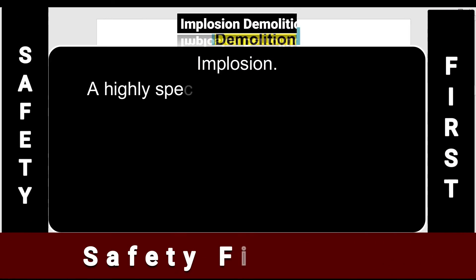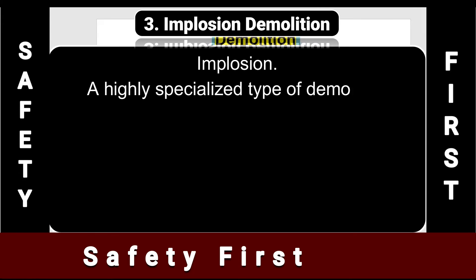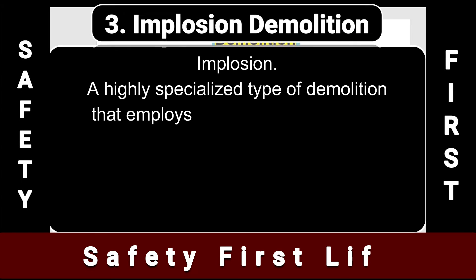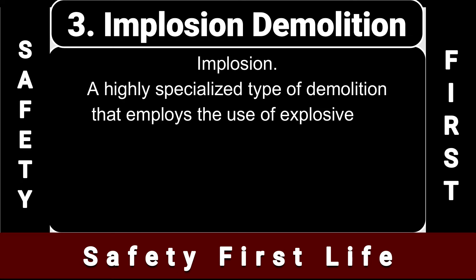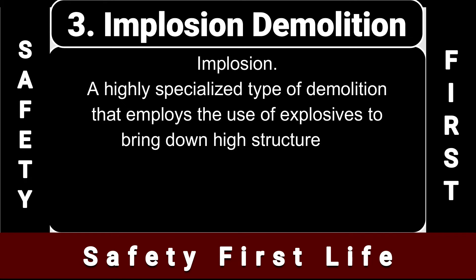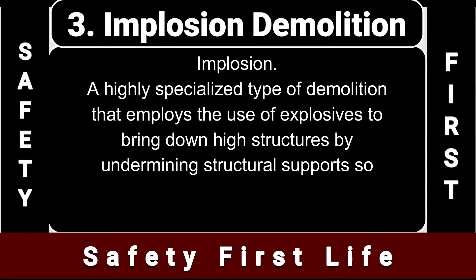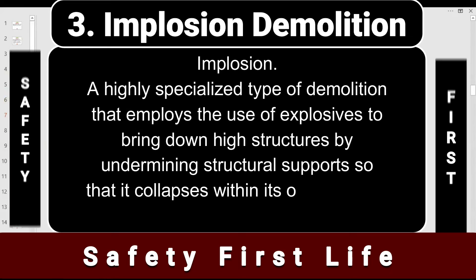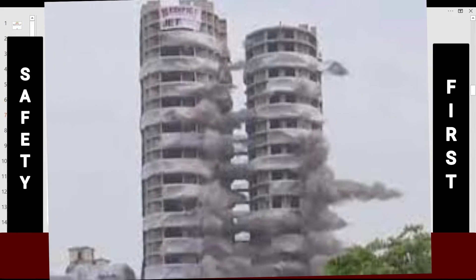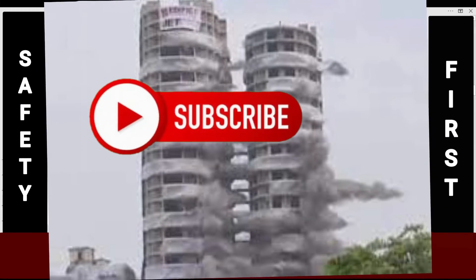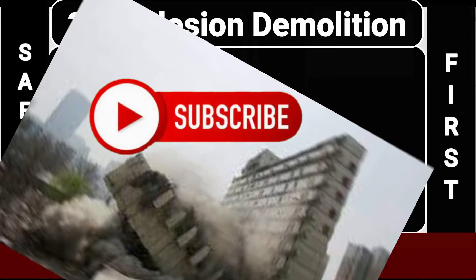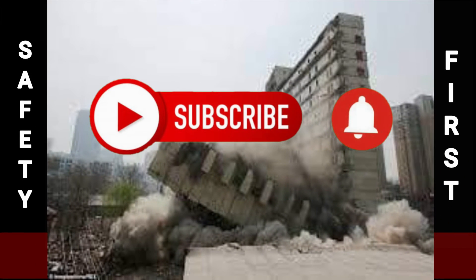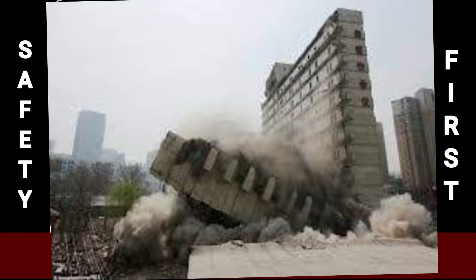Method number three is implosion — a highly specialized type of demolition that employs explosives to bring down high structures by undermining structural supports so that the structure collapses within its own footprint or along a predetermined path. Implosion is used in less than one percent of demolition projects. It is a safer way, but it is very expensive.